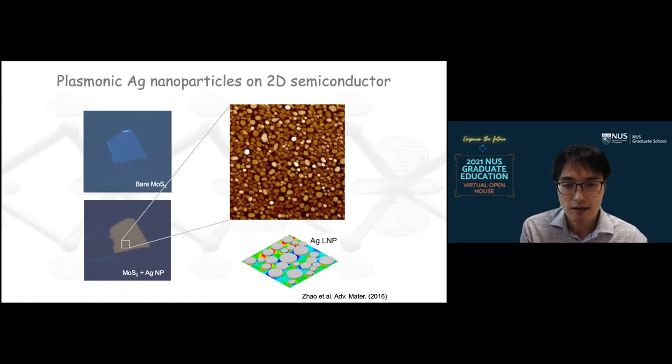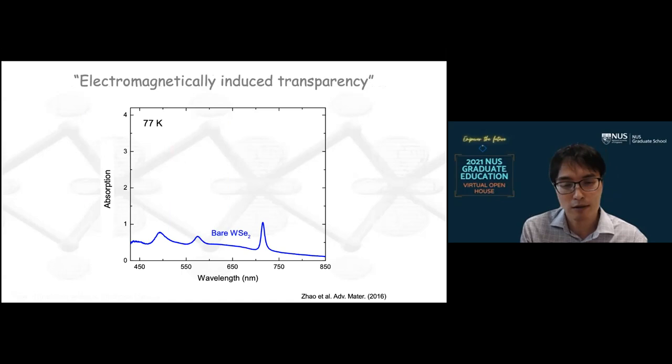So here's an absorption spectrum of a bare 2D material, which shows a resonance due to exciton here. Now, when we place these nanoparticles, which essentially host these plasmons, what we see is an interesting dip at the energy where we expect the exciton to appear, which is very counterintuitive because when we place one material on top of the other, the absorption is expected to be the sum of the two absorption of the two materials. In this case, the two-dimensional material and the metal nanoparticles. But what we see is a subtraction of the absorption from one layer to the other, which is a very unexpected behavior.